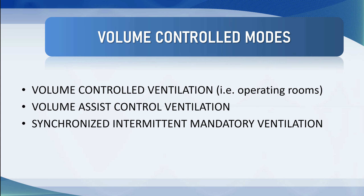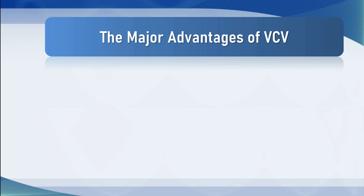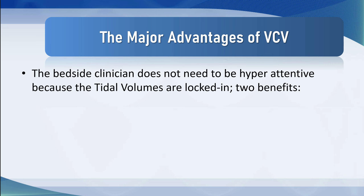For many years synchronised intermittent mandatory ventilation was very popular, particularly in Europe, and although it's less popular now it's still a valid mode. The major advantage of volume control ventilation is this: when a patient arrives in the ICU there's usually a lot of activity — putting in lines, drawing up infusions, positioning the patient, inserting catheters, talking with the family and consultants. The last thing the bedside nurse needs is to be making dynamic adjustments to the ventilator. The tidal volumes are locked in — that is the major benefit of volume control ventilation.